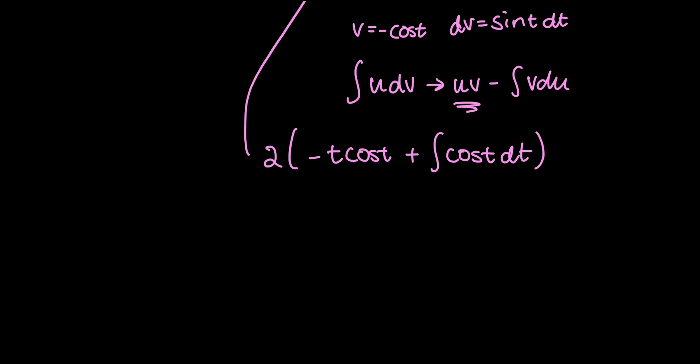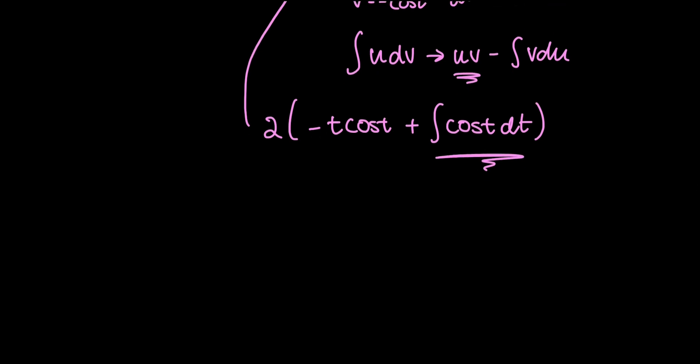All I have to do now is integrate this little integral. The integral of cosine t is pretty straightforward. That's just sine t. So I end up with 2 times negative t cosine t plus sine t plus c.